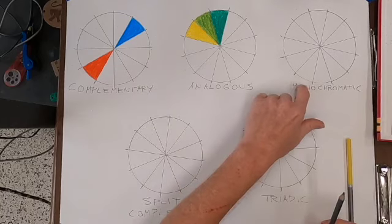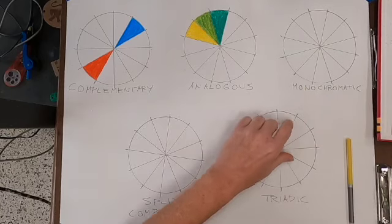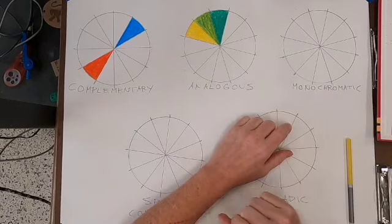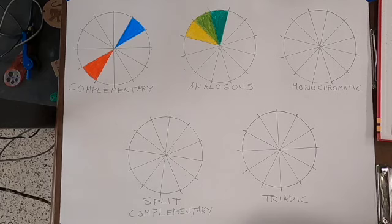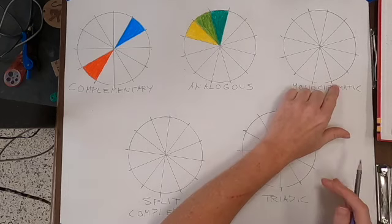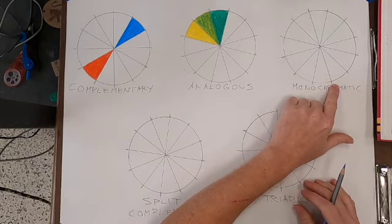Monochromatic - this is the easiest one of all. It means one color. For this one I'm going to go with a violet.